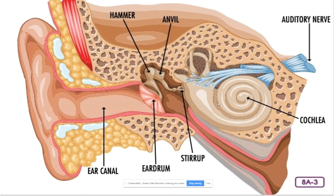Your middle ear is a tiny, air-filled space just behind your eardrum. As the eardrum vibrates or shakes, three itty-bitty bones inside the middle ear begin to move. These bones are named for their shapes: the hammer, the anvil, and the stirrup. They are the smallest bones in your body. The stirrup is the smallest of the three, no bigger than a grain of rice. These three tiny bones form a chain held in place by muscles that leads from the middle ear to the inner ear.